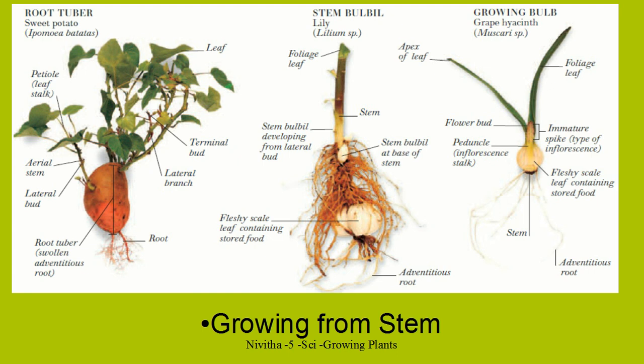Likewise, sweet potato and all those tubers have pores in them. From those pores, a plant comes up. A petiole is a leaf stalk. This is an aerial stem used in the air. This is a lateral bud — on the stem there is a bud, and from that bud a new branch or leaf comes up. There are also buds on the pores. The pores and buds on the tuber — from there also the plant grows.